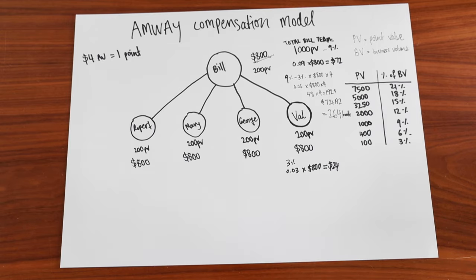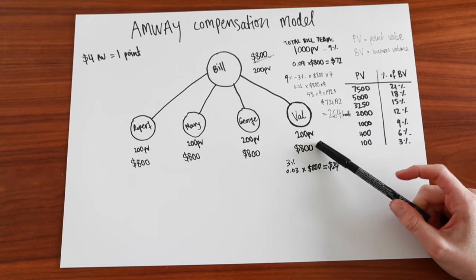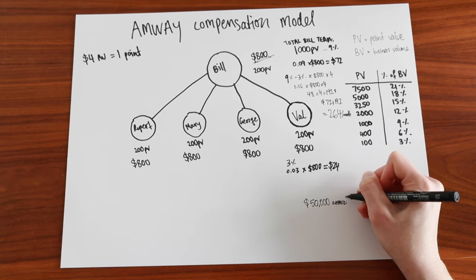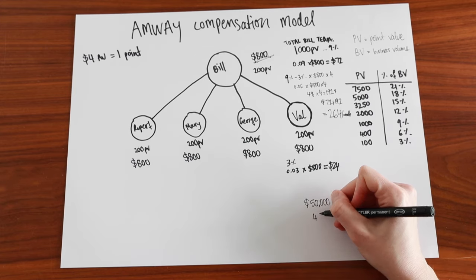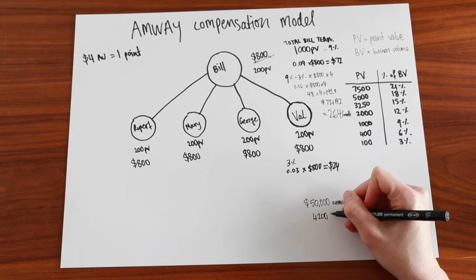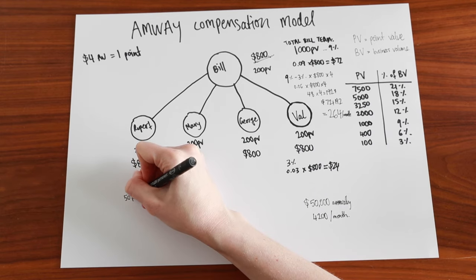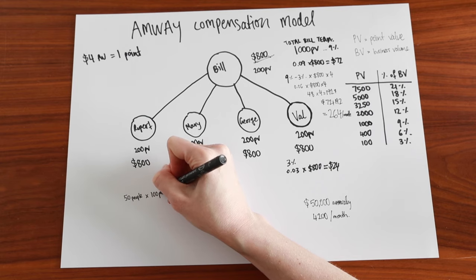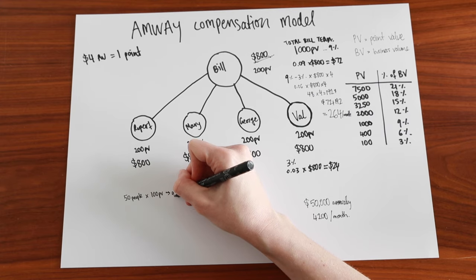So with this model, I was wondering how many people would you have to recruit that each spend $400 per month to earn about $50,000 annually. So $50,000 in a year divided by 12 is about $4,000, let's round up to $4,200 per month. So 50 people each spending 100 PV, which is $400.